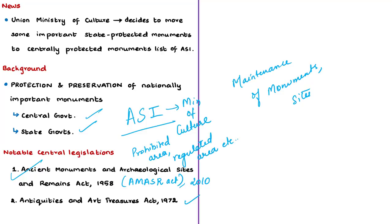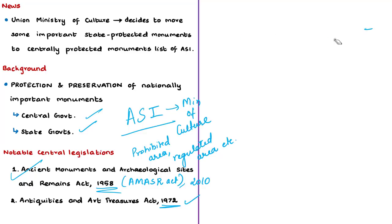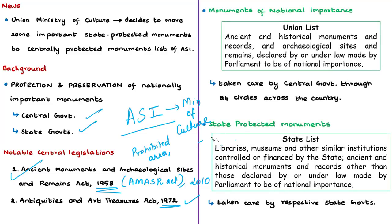Both the 1958 and 1972 Acts are central acts. State governments also have their own acts that follow the central acts in spirit and letter. Legislations relevant to protection of cultural heritage can be categorised into three types: international conventions and agreements, national laws, and state laws. The ASI protects monuments listed under national laws, hence they are called monuments of national importance. Under the 7th Schedule of the Indian Constitution, these fall in the Union List.